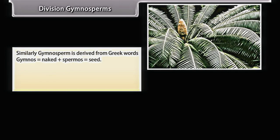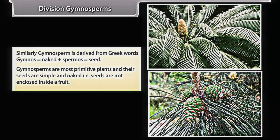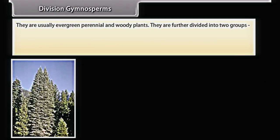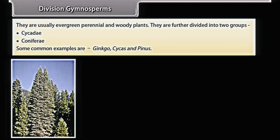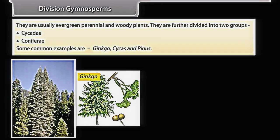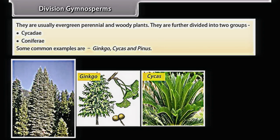Gymnosperm is derived from Greek words 'gymnos' (naked) and 'spermos' (seed). Gymnosperms are the most primitive plants and their seeds are simple and naked — that is, seeds are not enclosed inside a fruit. They are usually evergreen, perennial, and woody plants, further divided into two groups: Cycadae and Coniferae. Some common examples are Ginkgo, Cycas, and Pinus.